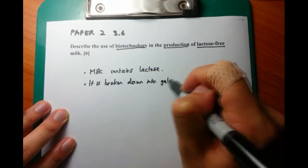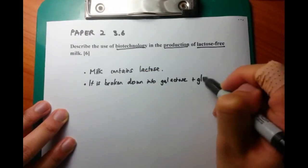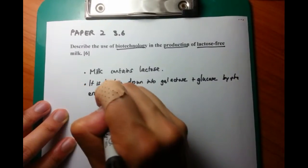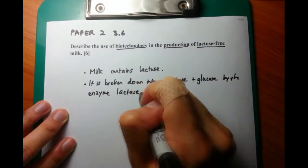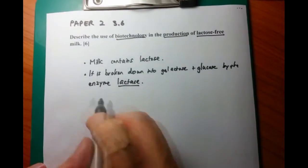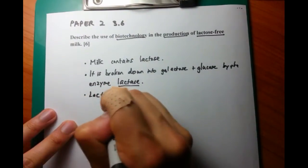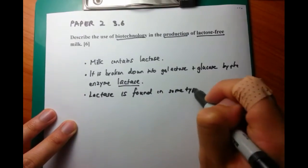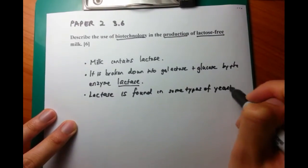Lactose, as we all know, is a two-molecule sugar. But milk contains lactose - that's the first point that we're going to write down. And lactose can be broken down into galactose and glucose by the enzyme lactase. So that's demonstrating your knowledge that lactose is a disaccharide and can be broken down further on.